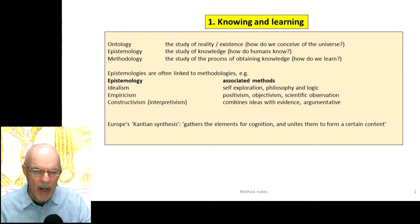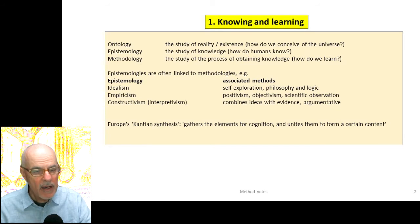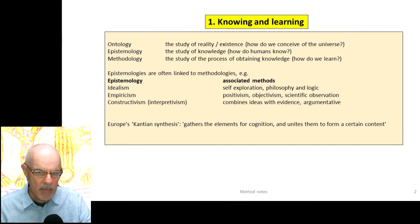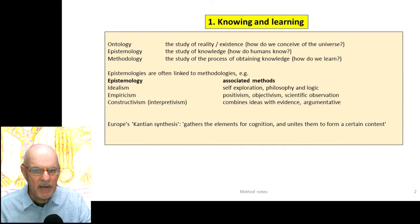In section one, I want to talk about knowing and learning — some basics about how we know things and how we endeavor to find out how to know things. Here are a couple of concepts to distinguish. Ontology means the study of reality or existence, how we conceive of the universe. And then following from that, we have epistemology, which means the study of knowledge — how do humans know things. Epistemologies are often linked to a method of finding out, the study of a process of obtaining knowledge.